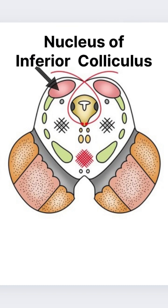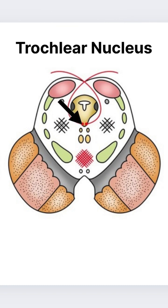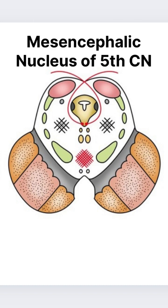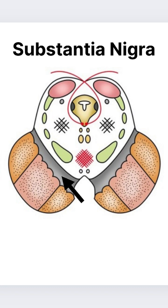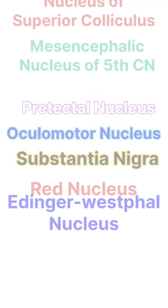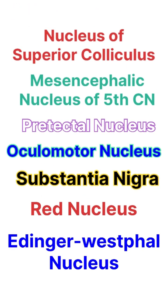Now, the nuclei at the level of inferior colliculus — there are four nuclei: first, nucleus of inferior colliculus; second, trochlear nerve nucleus; third, mesencephalic nucleus of trigeminal nerve; and fourth, substantia nigra.